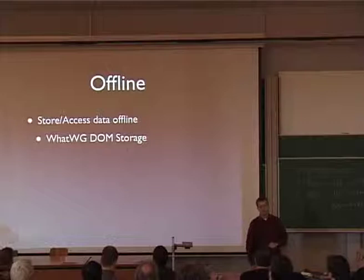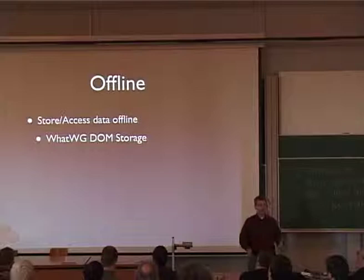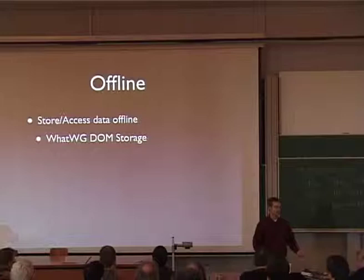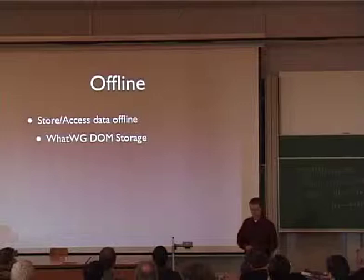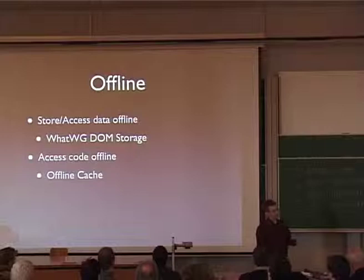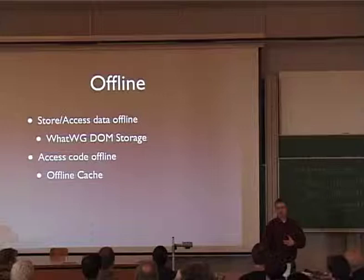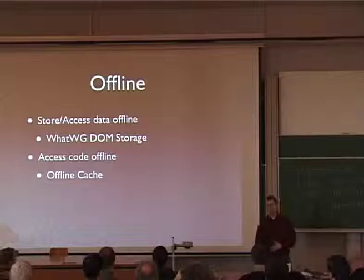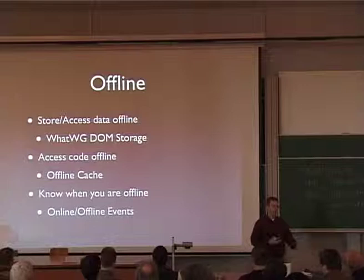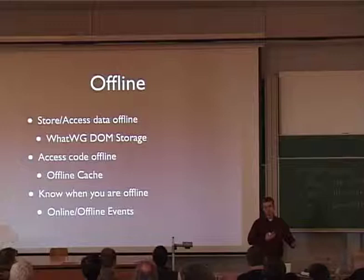Offline really composes of three main parts. First, I've got to be able to access and store data offline — if I'm building an offline email client, I have to be able to take my email messages and headers and shuffle them somewhere on disk and access them when I'm not connected to the net. That's implemented via WhatWG DOM storage, already partially implemented in Firefox 2. Second, I need to be able to store code and other resources — JavaScript, CSS files, images, other things — without downloading them over the net. That's where offline cache comes in. And the last thing is the app needs to know whether it's online or offline so it can sync when it comes back online and not make network requests when offline. We've added online and offline events.